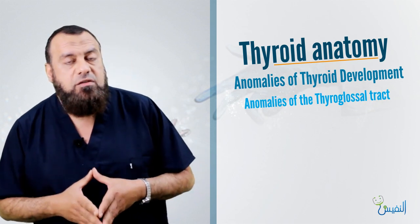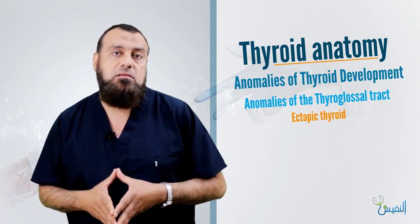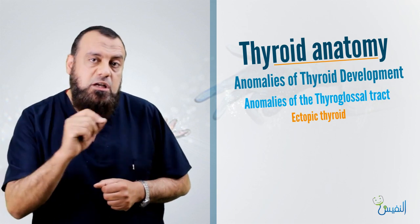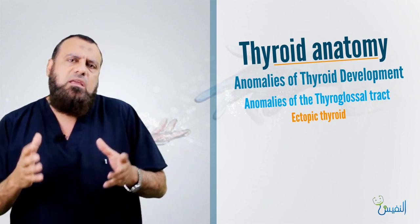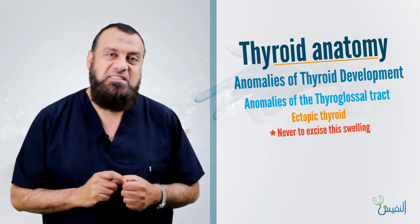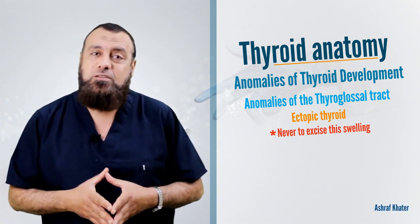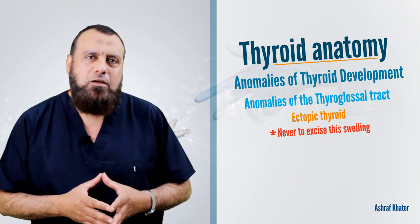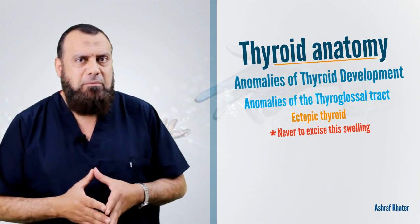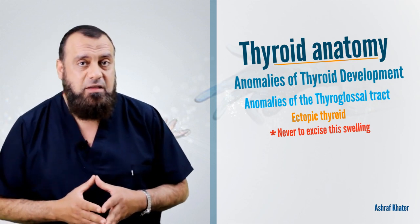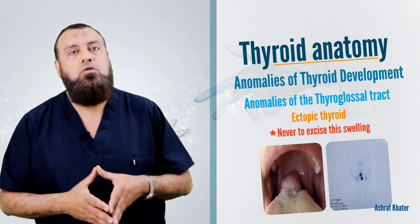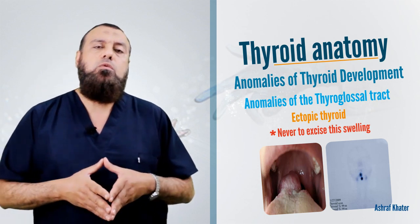The first anomaly of the thyroglossal duct is the ectopic thyroid gland. The ectopic thyroid gland may be present in the foramen cecum, presenting as a swelling at the base of the tongue. We may use a thyroid scan to diagnose it, but never excise this swelling because it will be the only functioning thyroid tissue. It may also be present elsewhere in the neck, as seen in the photo, and diagnosis depends on thyroid scan.